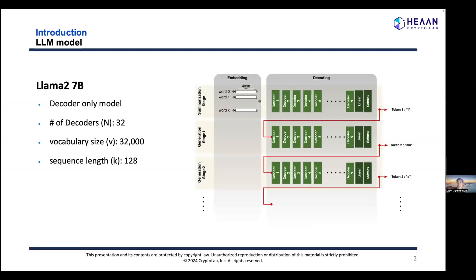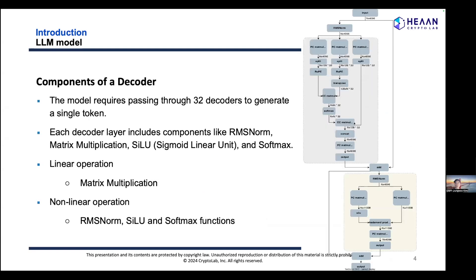Let me briefly introduce the LLaMA-2 7B model we have implemented. LLaMA-2 7B is a transformer-based, decoder-only model. It has 32 decoders and a vocabulary size of 32,000. To generate a single token, it passes through all 32 decoders. Each decoder includes linear operations like matrix multiplication, as well as non-linear operations like RMSNorm, SiLU, and Softmax.